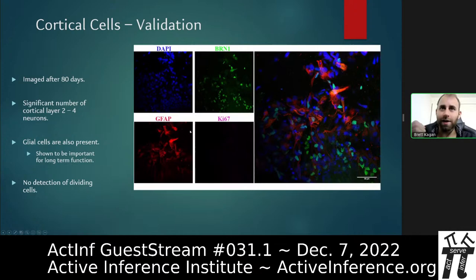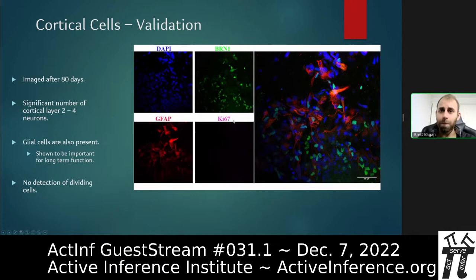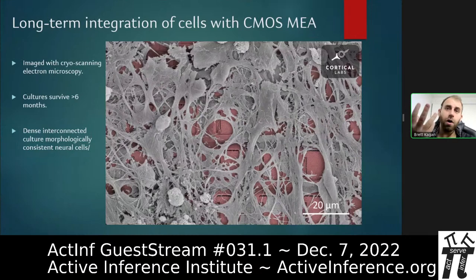An important concern with stem cell-derived cultures is that not all cells may be fully differentiated — undifferentiated pluripotent cells left in a dish can turn into invasive or potentially cancerous cell types. Ki67 marks dividing cells, flagging any that aren't fully differentiated. In our cultures, we had none to very few, which means we can maintain these cultures for extended periods.